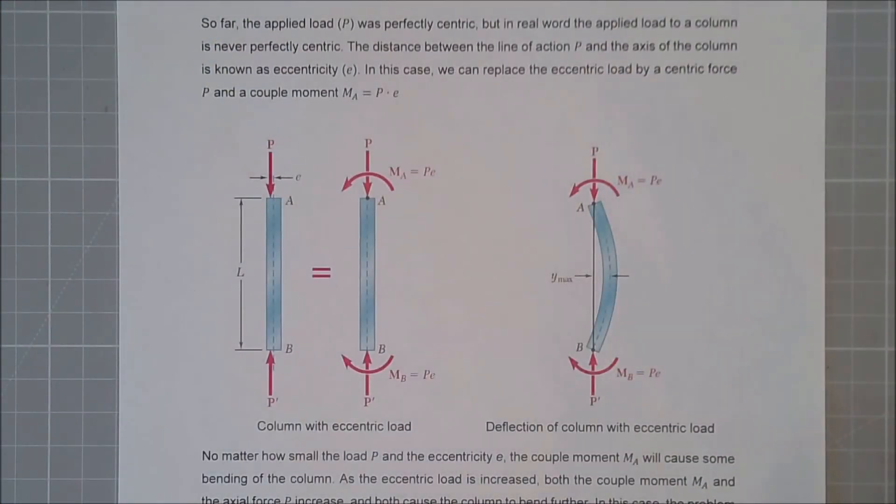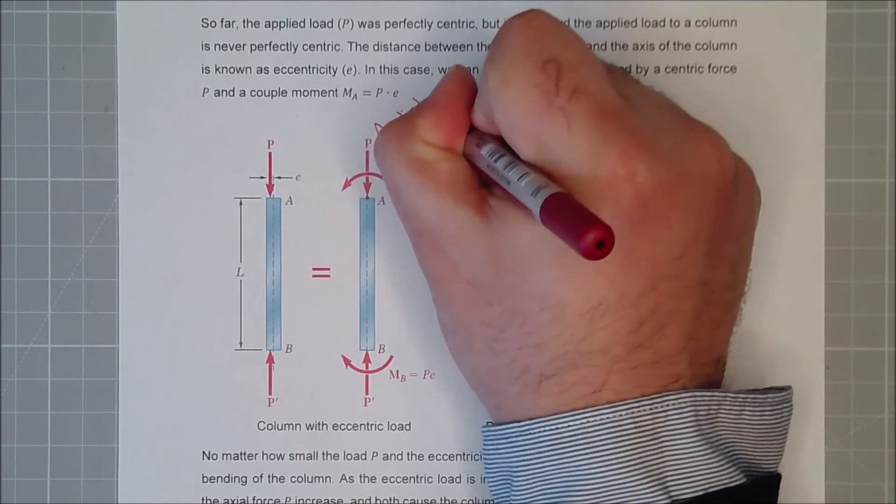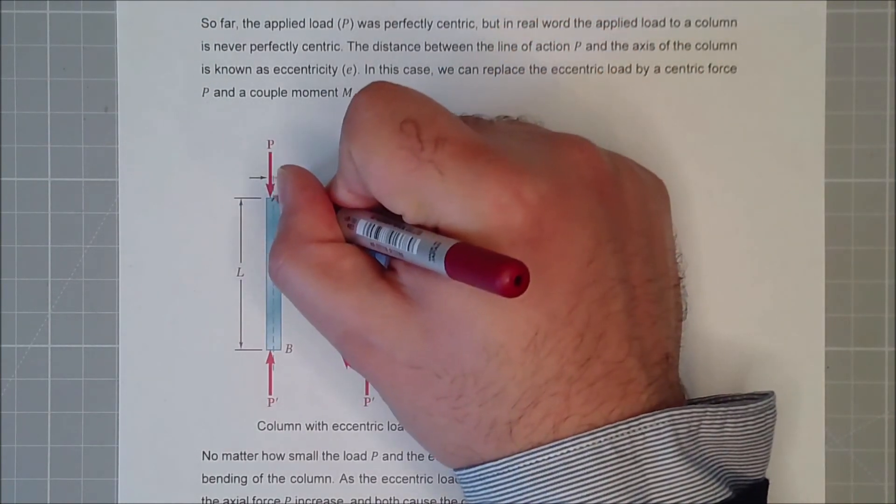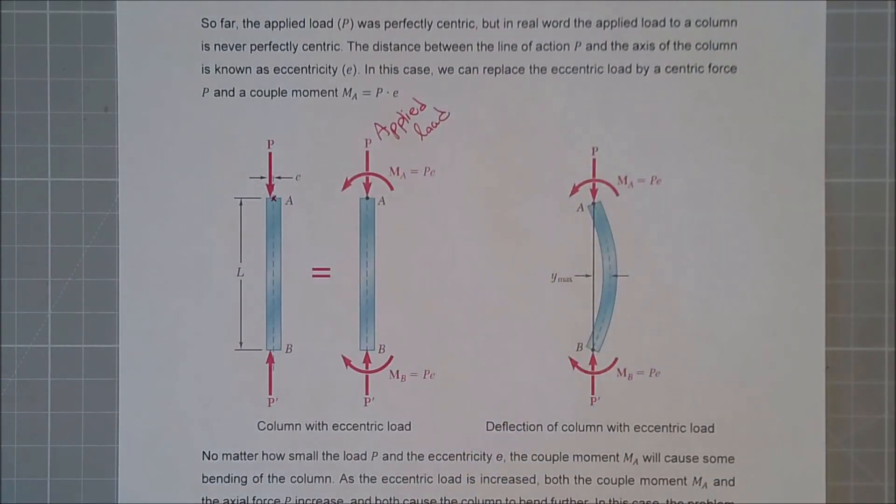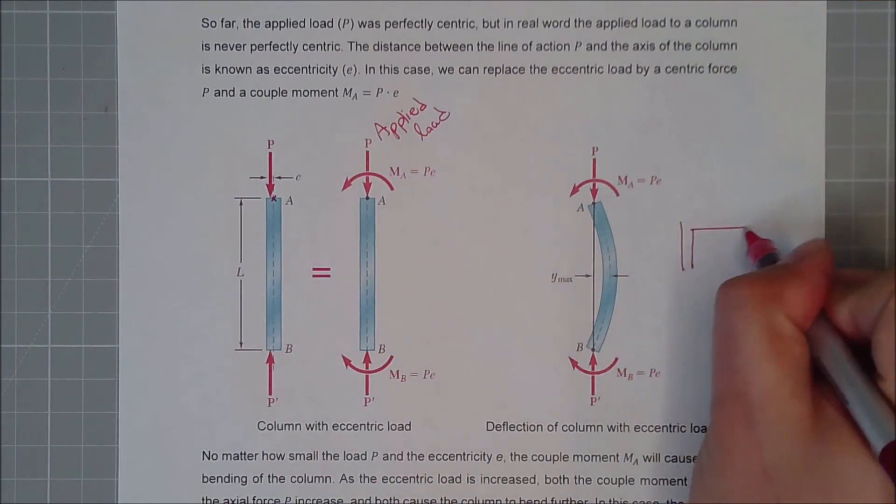If you remember, one of the assumptions that we did for the Euler's theory was that the load applied, the applied load of my compressive axial force, will be applied to the center point, the centroid of my column. But unfortunately, in real world, this usually doesn't happen.